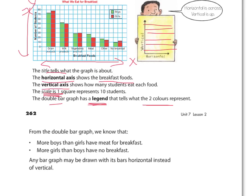Any bar graph may be drawn with its bars horizontal instead of vertical. So they could very well have drawn their graph with the bars going sideways as opposed to up and down. Either is just fine.